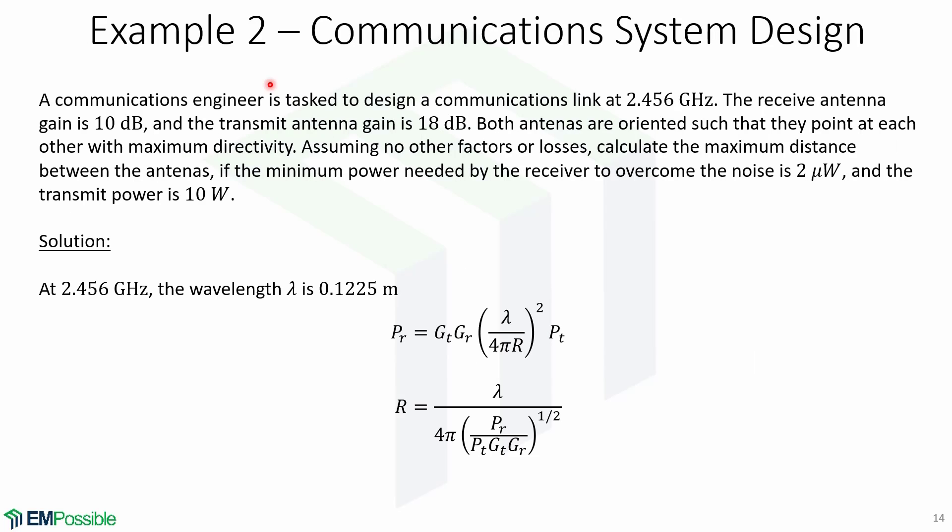Now let's look at another example of a communications system design. A communications engineer is tasked to design a communications link at 2.456 GHz. The received antenna gain is 10 dB, and the transmit antenna gain is 18 dB. Both antennas are oriented such that they point at each other with maximum directivity. Assuming no other factors or losses, calculate the maximum distance between the antennas, if the minimum power needed by the receiver to overcome the noise is 2 microwatts, and the transmit power is 10 watts.